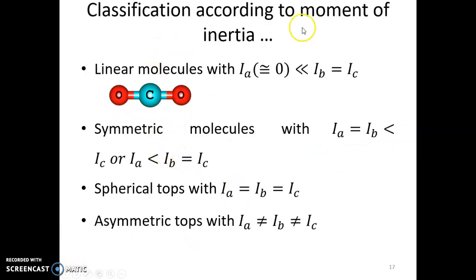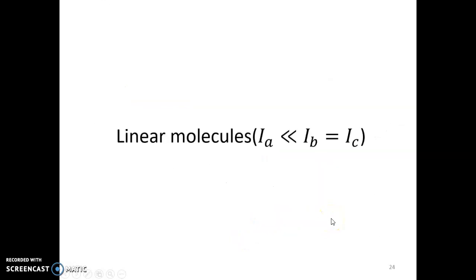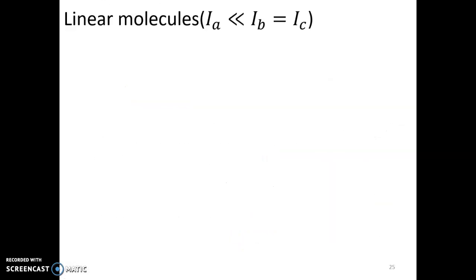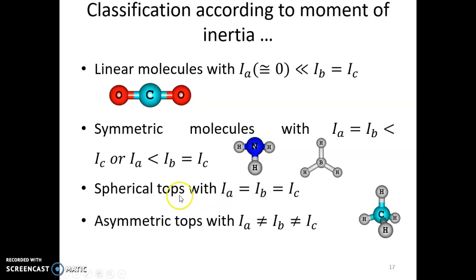So the classification according to the moment of inertia: linear molecules have Ib equal to Ic and Ia negligible. For symmetric molecules, two of them are equal and one of them is different. The spherical top molecules, the three of them are equal. And for the asymmetric top molecules, three of them are different. So we continue with linear molecules in the next video.